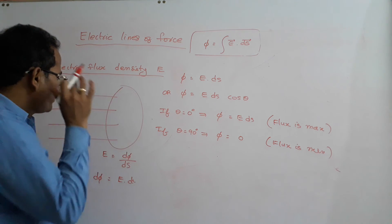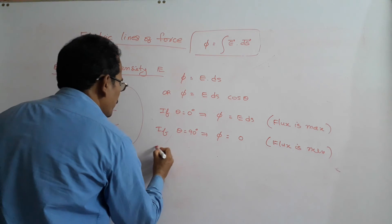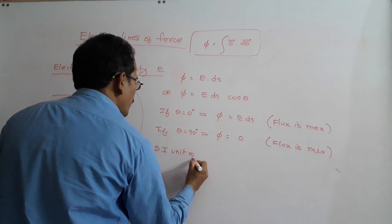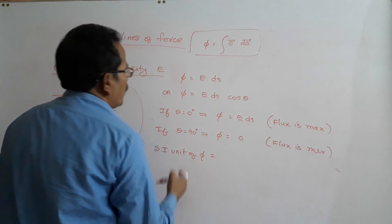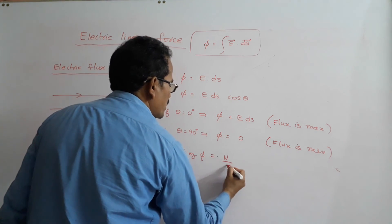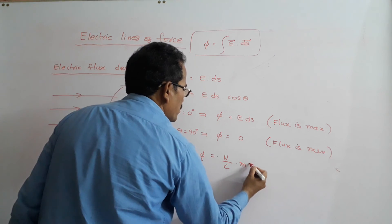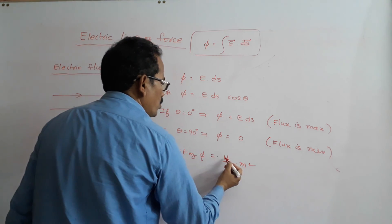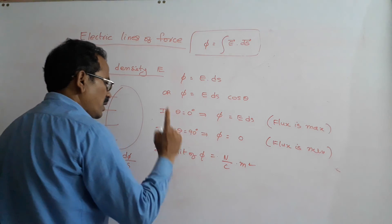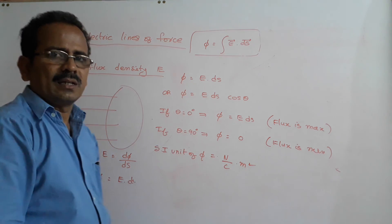What is the unit of phi? The unit of E is Newton per Coulomb, and the unit of area is metre squared. So the unit of electric flux is Newton metre squared per Coulomb.